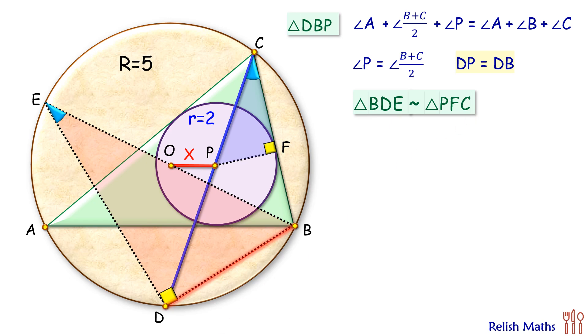As the triangles are similar, thus the ratio of sides will be equal, or we can say that BD upon BE will be equal to PF upon PC.